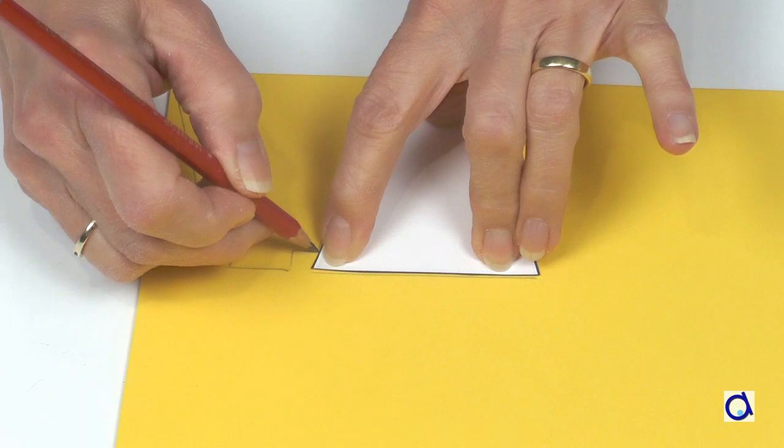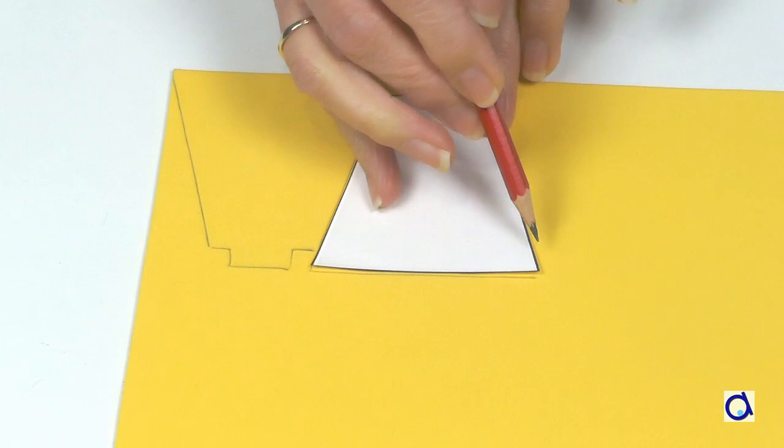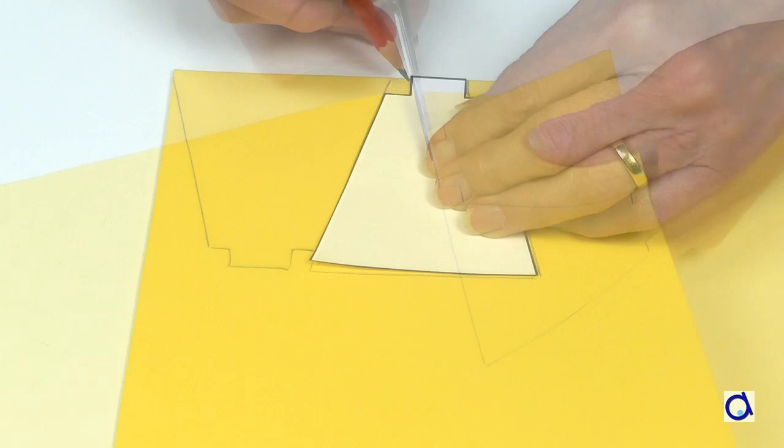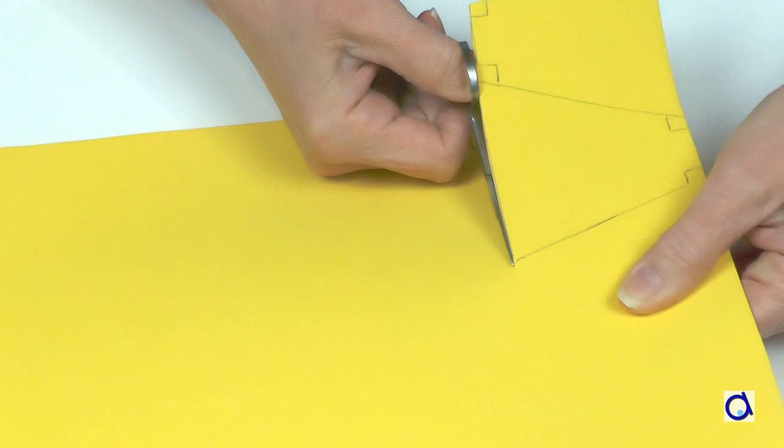Use a yellow foam sheet to make the body of the finger puppet. Take the pattern in the supporting document and trace it twice on the foam sheet. Cut out both sides of the bee's body.